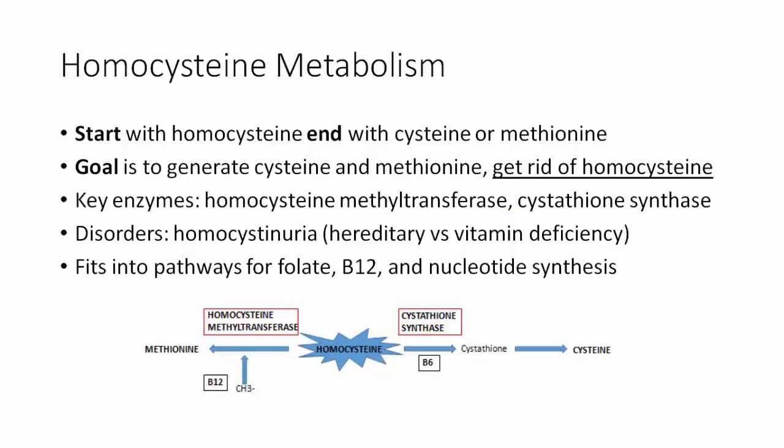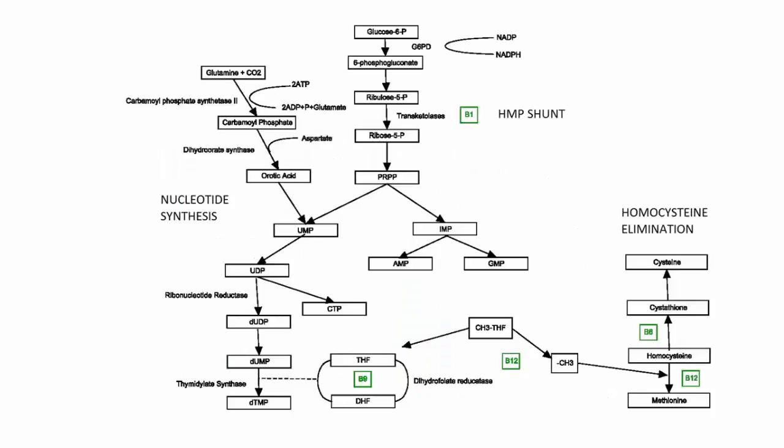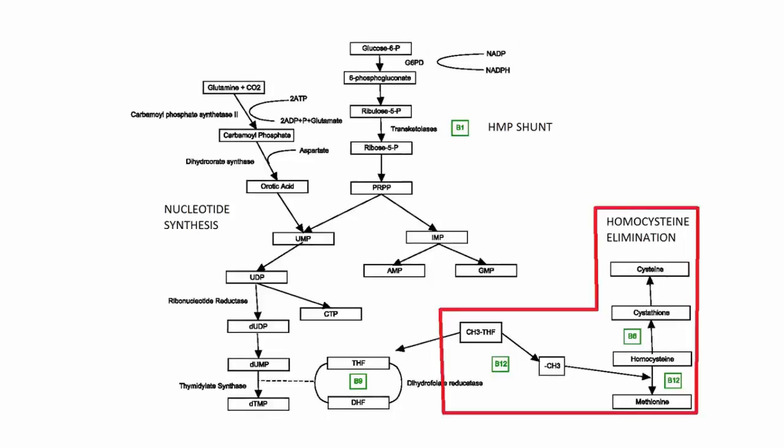This fits nicely into pathways for folate, B12, and nucleotide synthesis, which we'll see in the integrated pathway model. Looking at our integrated pathways, we can see that the homocysteine elimination pathway fits nicely with the HMP shunt and the nucleotide synthesis pathway. Today we'll be focusing specifically on homocysteine elimination, but it's important to reference back to see how it fits with the process of nucleotide synthesis.